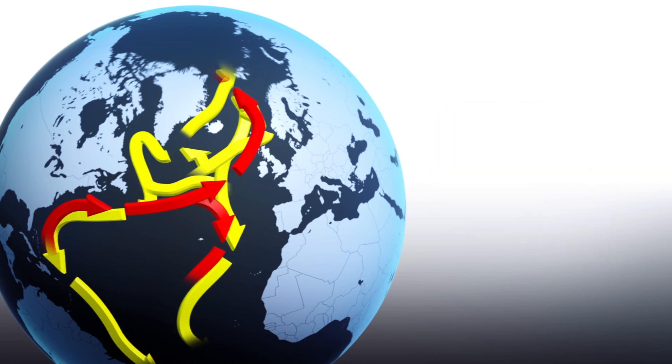Comparing data from the three cores revealed that the AMOC started weakening about 400 years before a major cold snap 13,000 years ago. It began strengthening again about 400 years before an abrupt warming 11,000 years ago.